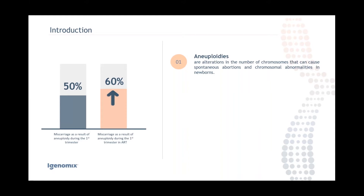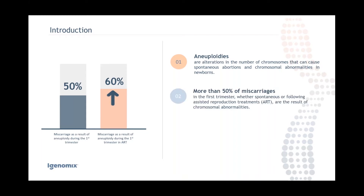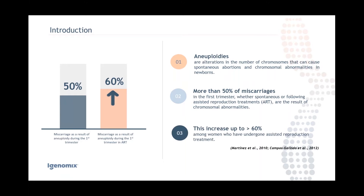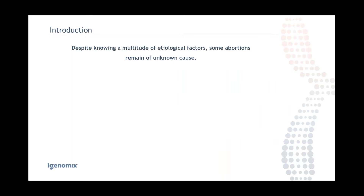More than 50% of miscarriages in the first trimester are the result of aneuploidies or chromosomal abnormalities, and this can increase up to 60% among women who have undergone assisted reproduction treatment. Despite knowing a multitude of etiological factors, some abortions still remain of unknown cause.